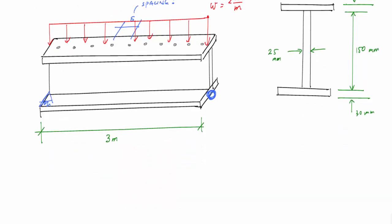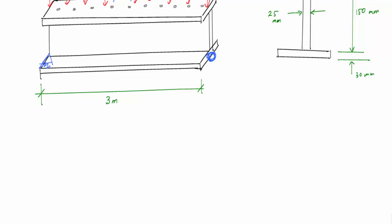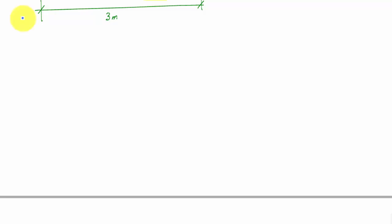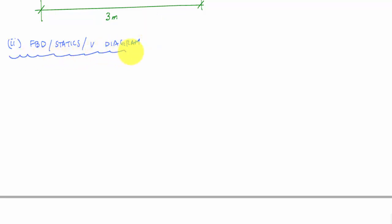The first step is statics: calculate the reactions and draw the shear-moment diagram. I'll do this quickly since this is a simply supported beam. We only really need the shear diagram here, because the question asks for connector spacing, which is associated with shear flow, and shear flow is associated only with the internal shear loading.